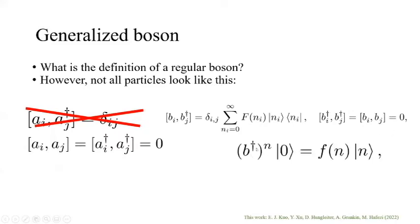Let's define B dagger acting on n to be f(n+1). When f(n) is the square root of n factorial, this gives you the standard regular boson. One can also define multi-bosons. The capital F and lowercase f are actually related. If you're interested, you can check out our paper.